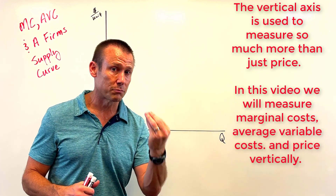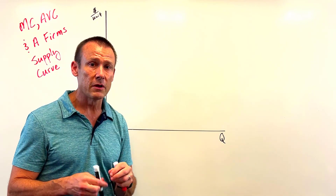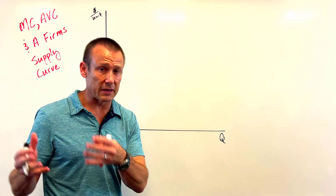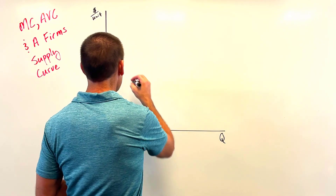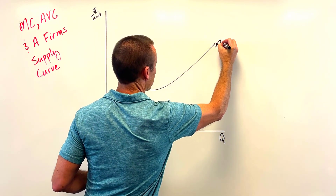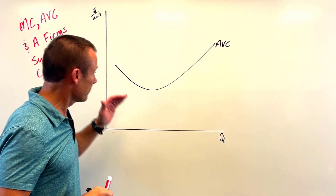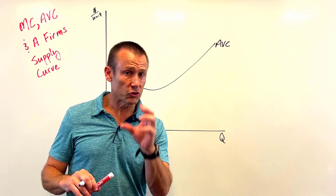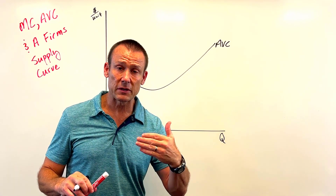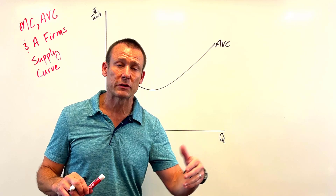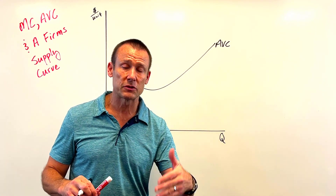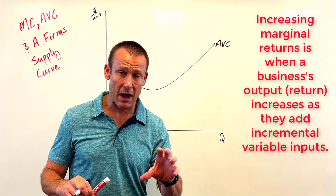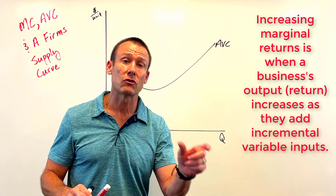The first curve we're going to draw is the average variable cost curve. It looks something like this — decreasing average variable cost and then increasing average variable cost. Remember, we think about firms in the short run. At first they get increasing marginal returns as they add additional variable inputs to a set of fixed inputs — output keeps going up.